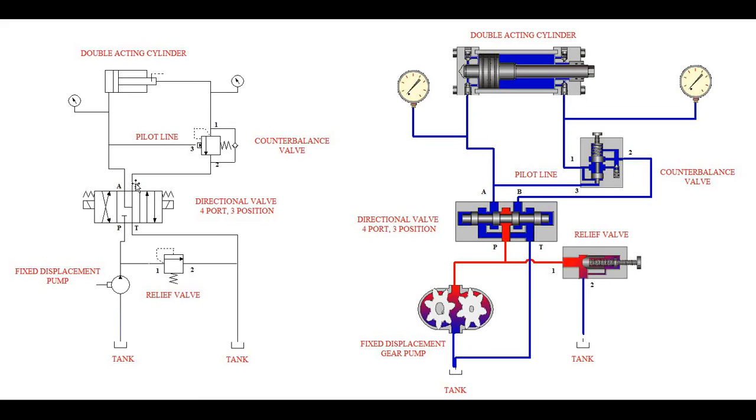Our far right position would be P going straight through to A and B coming back to T. If we look at our cross-section view of the component here, it's the same depiction. In our center position, which is shown here,